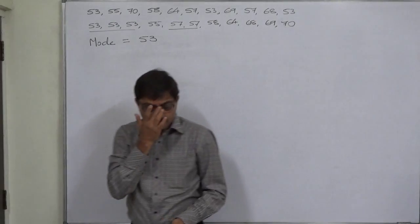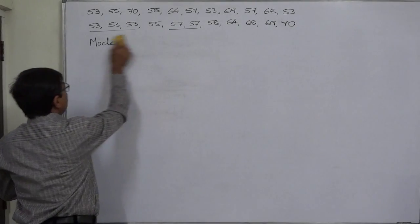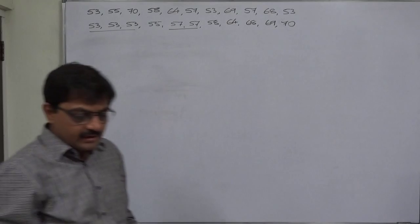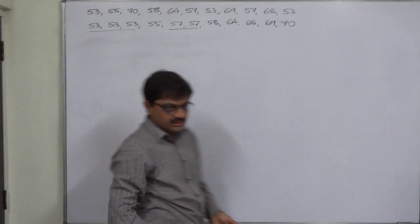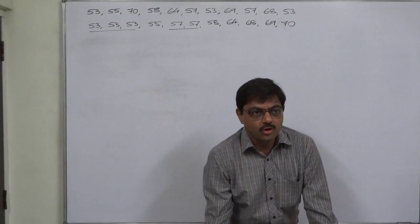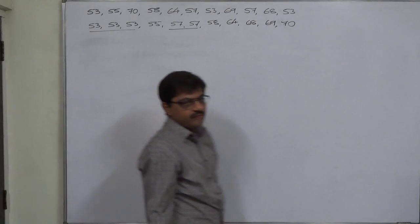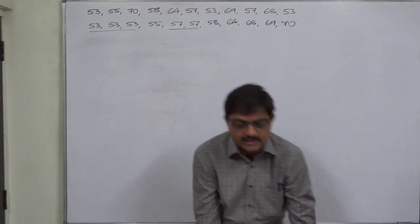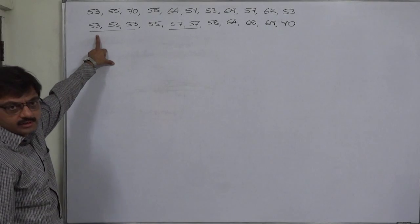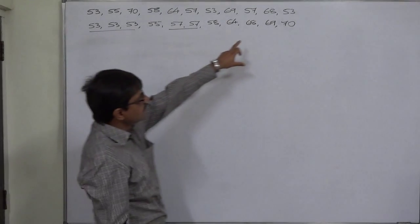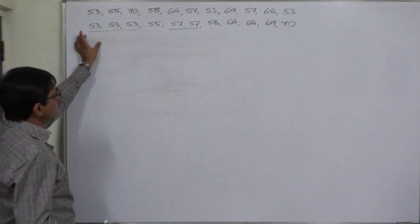There is no calculation required for the determination of mode. Now, for this data, we are going to determine the median and some other measures of the median family — median, quartile, percentile, deciles — which are known as measures of location. To find the median or any other measure of the median family, first we have to arrange the data into ascending order, from the lowest value to the highest value. Here, the data has already been arranged in ascending order.